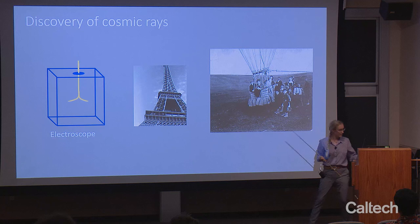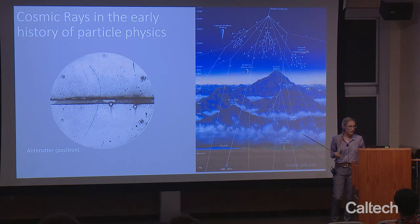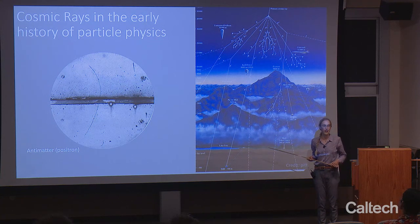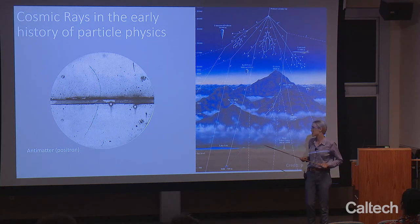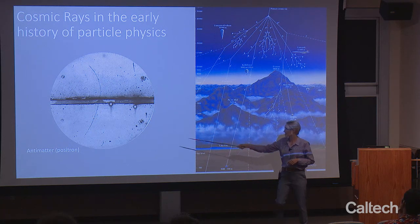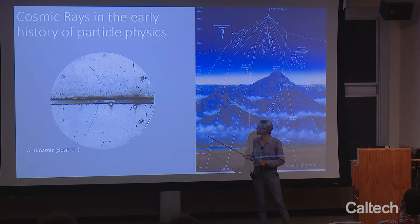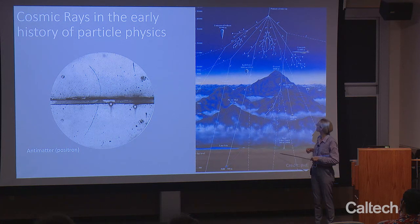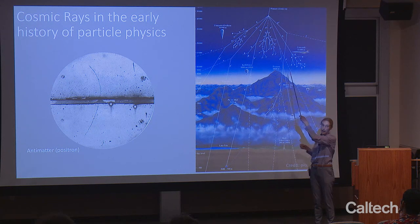Ever since then, the big questions about cosmic rays have been: where do they come from? Parts of this puzzle have been answered, but at the highest energies it hasn't been. Along the way, cosmic rays propelled early particle physics. Before accelerators like the LHC were built, cosmic rays were the only source of high energy particles to study. One example is the discovery of antimatter right here at Caltech in the 1930s — the positron was discovered using cosmic rays, as shown in this photographic plate.